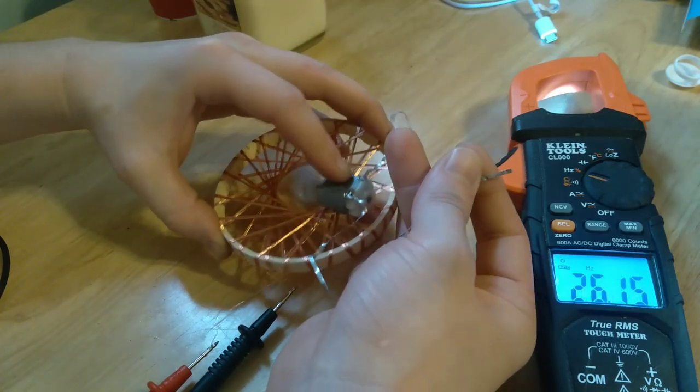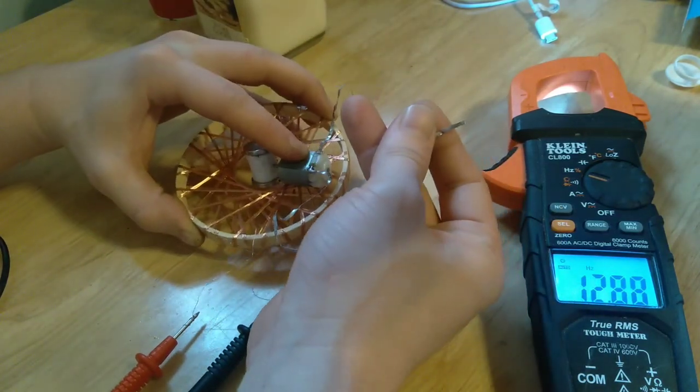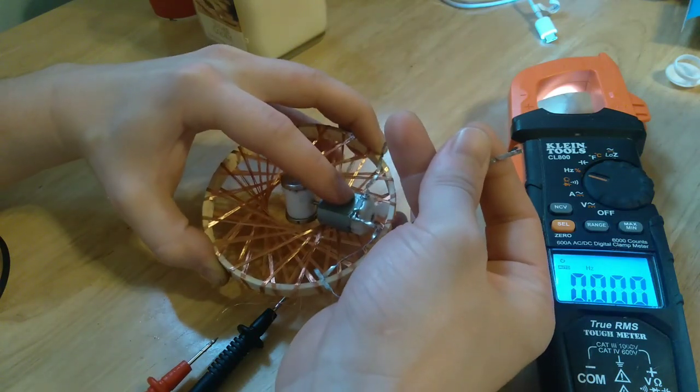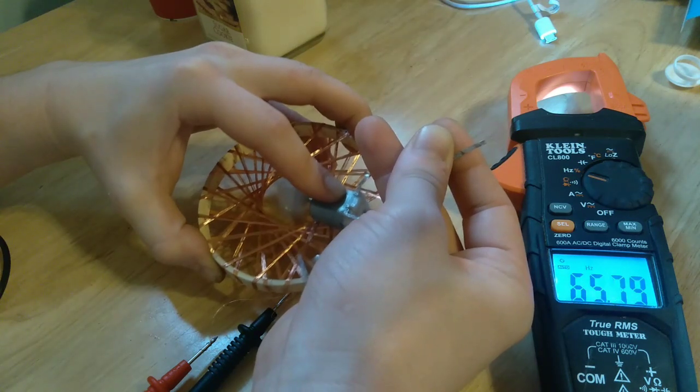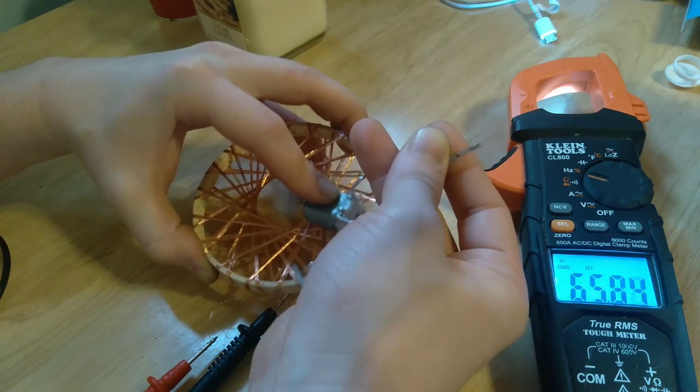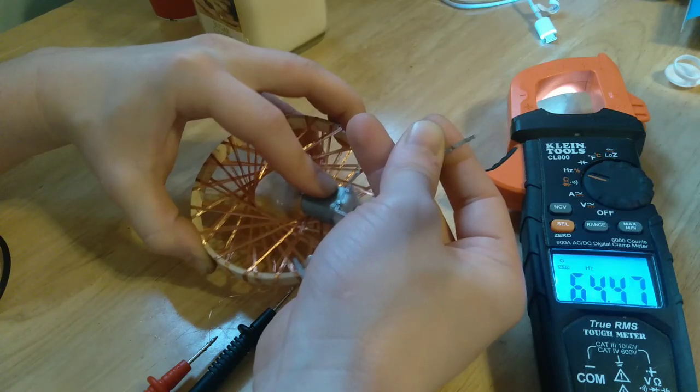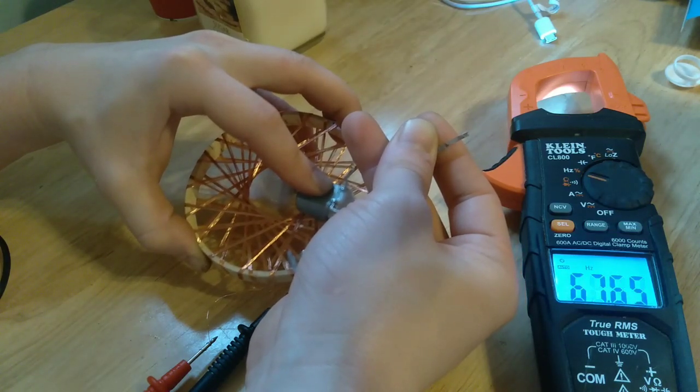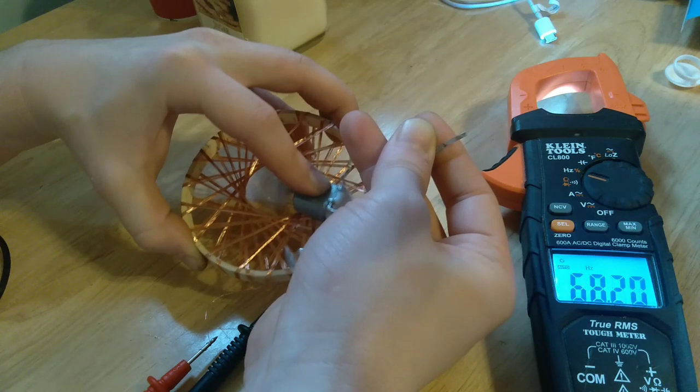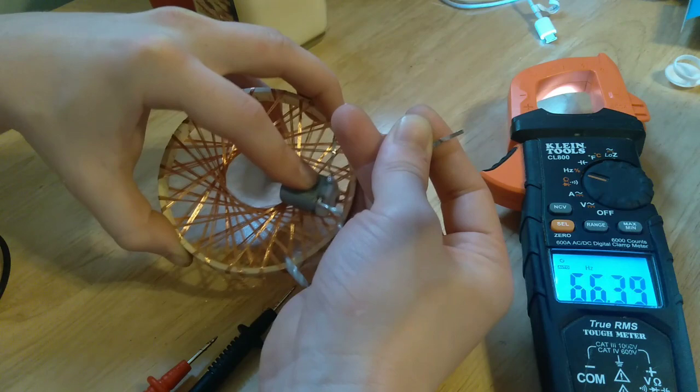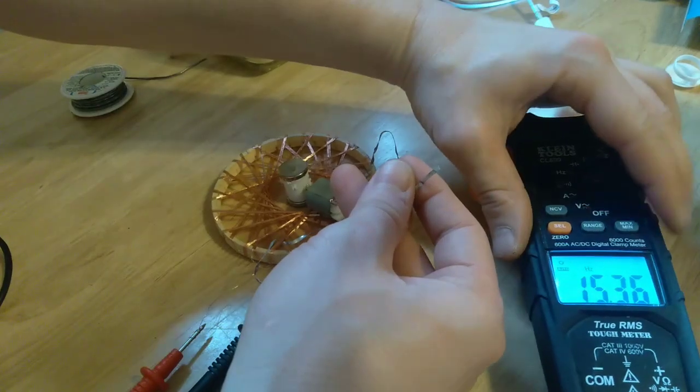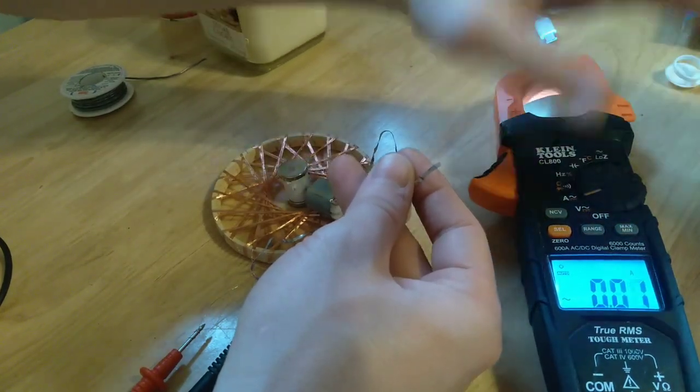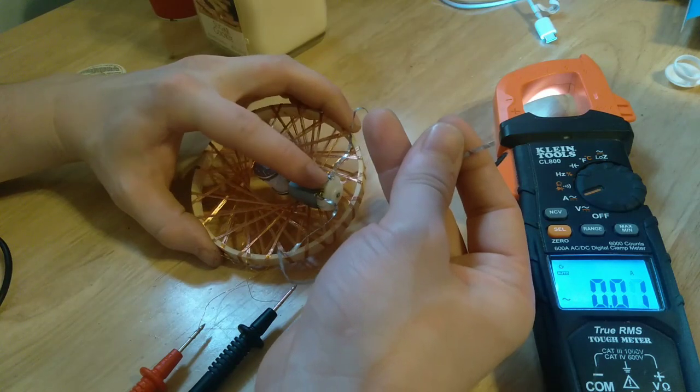So one coil produces 30 Hertz, the other coil produces 60 Hertz, and I think you just witnessed that. This is a 3 volt battery. Now I don't know if my amp meter is working or not. Okay it is good. Let's see how many amps we can produce.